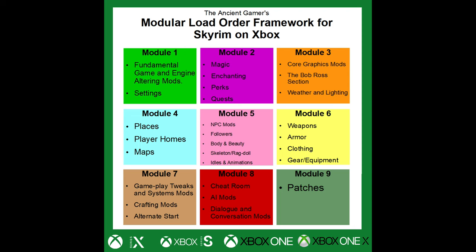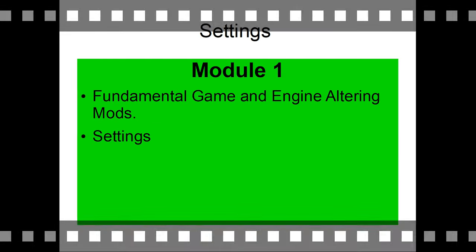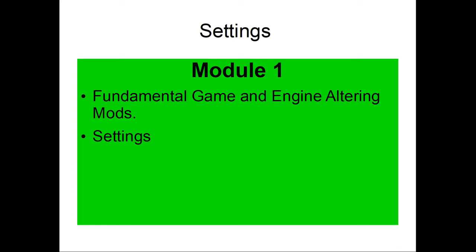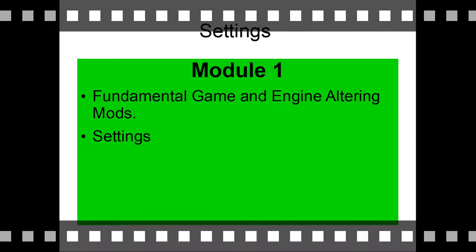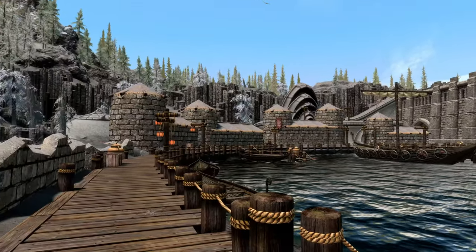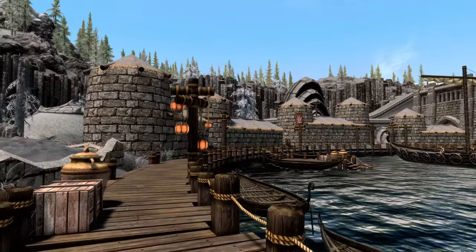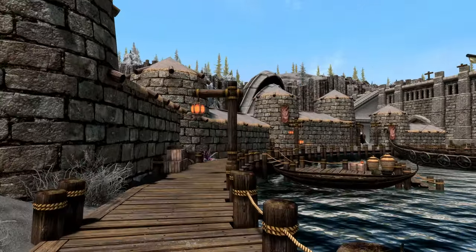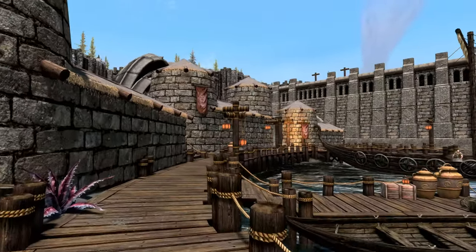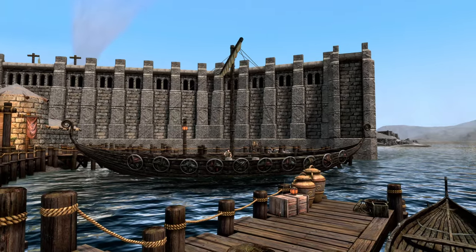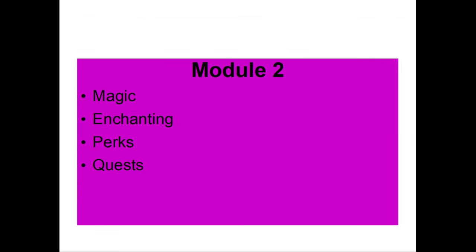Module one is for fundamental game and engine-altering mods. Really, this is USSEP — the patch is a master file and needs to go at the very top. Also, settings or .ini mods like less grass or field of view mods go here. The very first thing Skyrim does on startup is run the settings, so you want them up high, just under the patch, so every mod loaded below gets the word that the settings have changed.